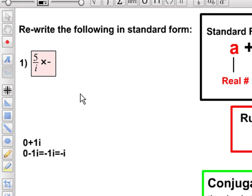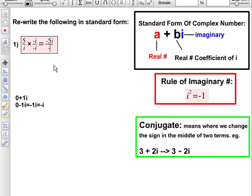OK, so let's do that, so we multiply the top by negative i, and the bottom by negative i, and this would actually give us negative 5i in the numerator, and negative i squared in the denominator.